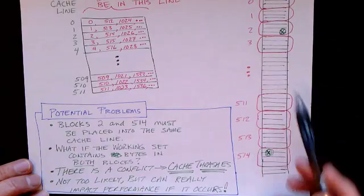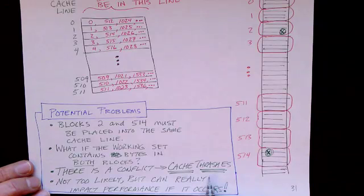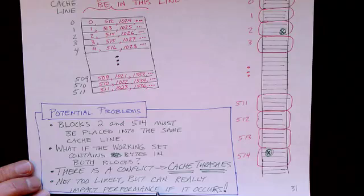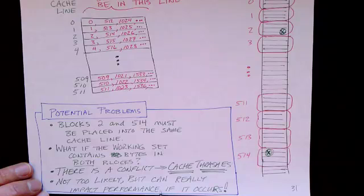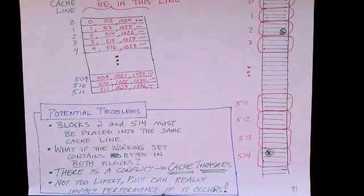So you can see what's going on. It can't keep both these blocks in the cache at once. And if both blocks contain data that's part of the working set, we've got a problem. And that problem is called thrashing. So in this particular example, there's a conflict. And the cache thrashes. And this is not too likely, but it can really occur. And when it does occur, it's going to really affect performance in a very negative way.